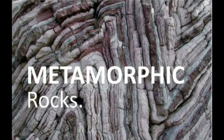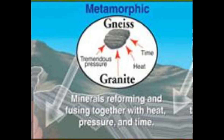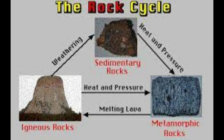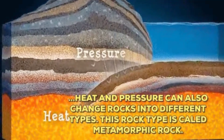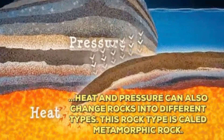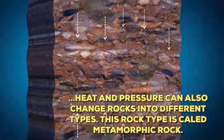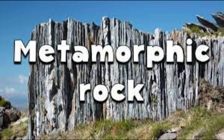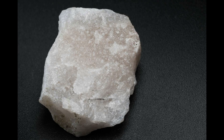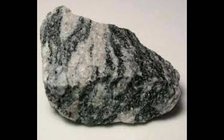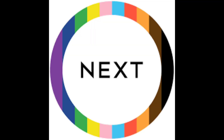Metamorphic rocks are formed by sedimentary or igneous rocks which have undergone several changes in their physical or chemical composition. Some examples of metamorphic rocks are slate, marble, quartzite, and gneiss.